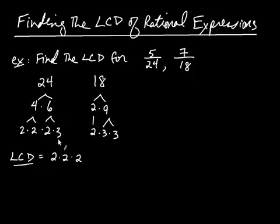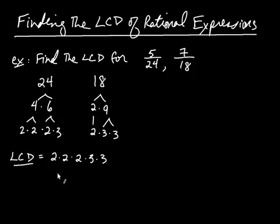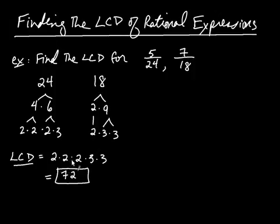Then move on to 3's. The 24 has one 3, the 18 has two 3's, so we go with the 18's 3's and write down a 3 and a 3. The number you get when you multiply all these together is your LCD: 2×2×2 is 8, and 3×3 is 9, so 8×9 is 72. So 72 is the LCD.